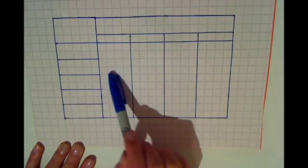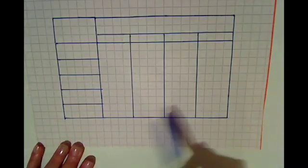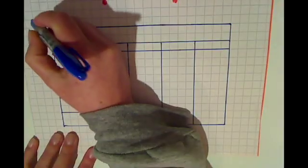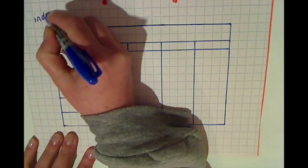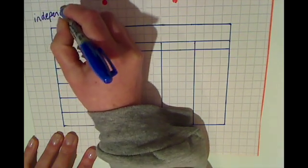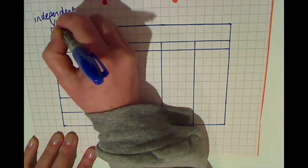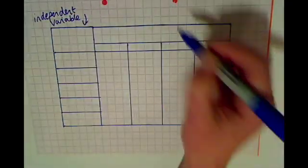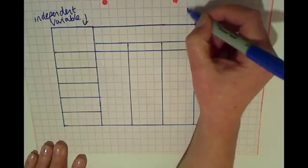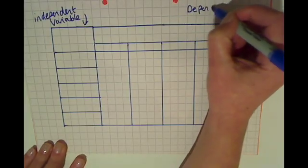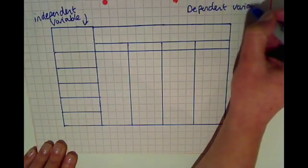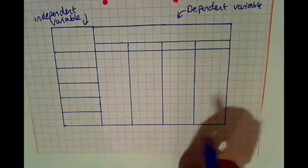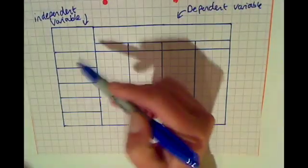And four columns for your dependent variable. So just to remind ourselves, we'll write it up here. Independent variable is going to go in this column and dependent variable is going to go in these four columns over here. So we always put the thing that we change in.